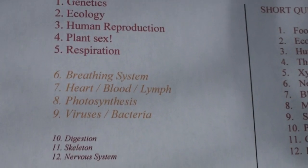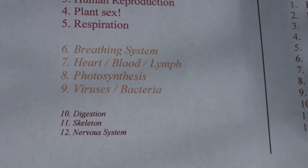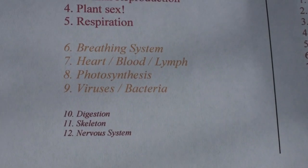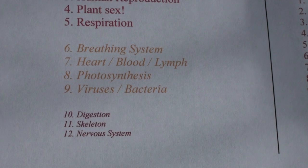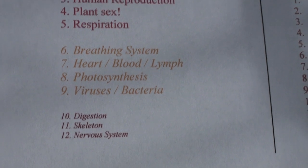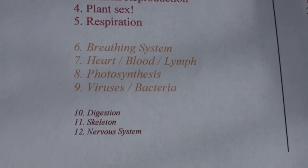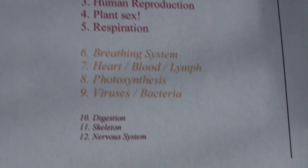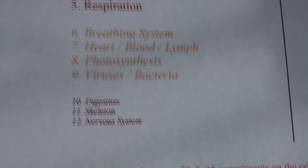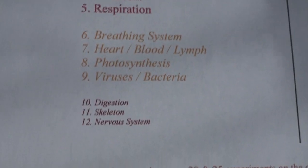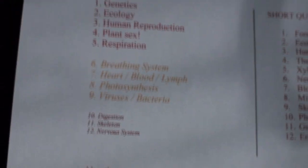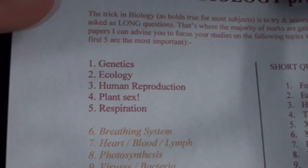Plant reproduction and respiration — they'd be the five most likely topics. After that: breathing system, heart, blood — that should come up — and photosynthesis, viruses and bacteria, digestion, the skeleton, and the nervous system.